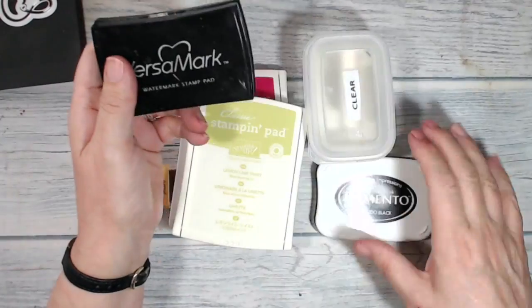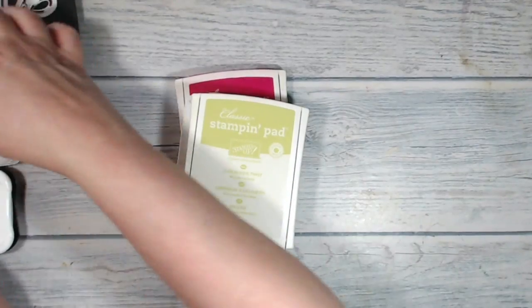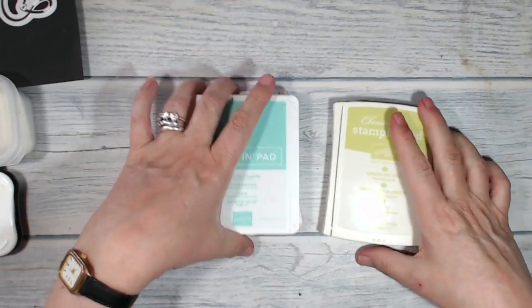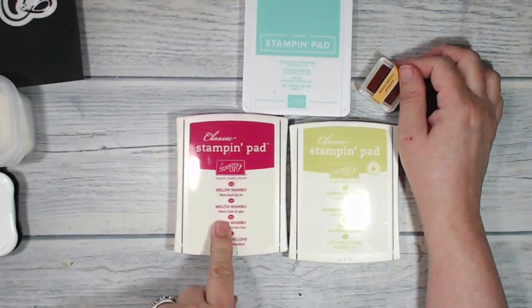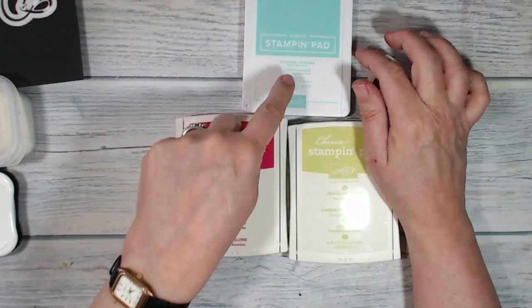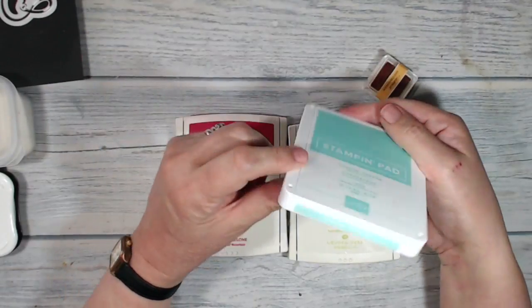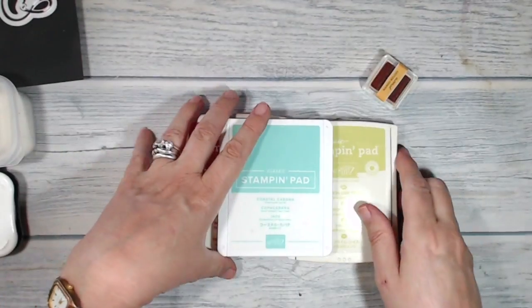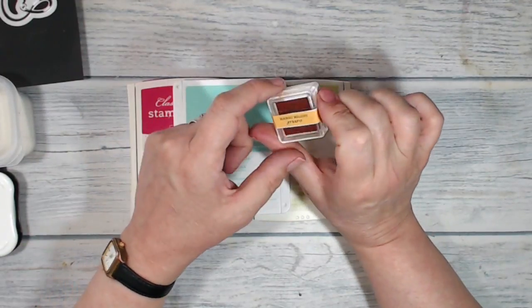I'm using Versamark ink, Memento, and clear embossing powder. And I've got a few different colors of ink here, so I've got melon mambo, lemon lime twist, coastal cabana coming back in the new catalog, and this is in the new style stamping pad case. And I've also got some mango melody.